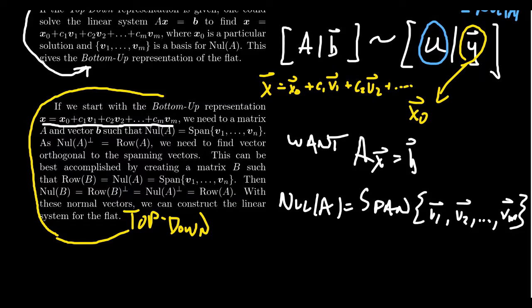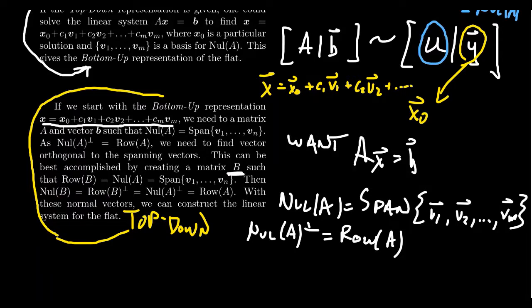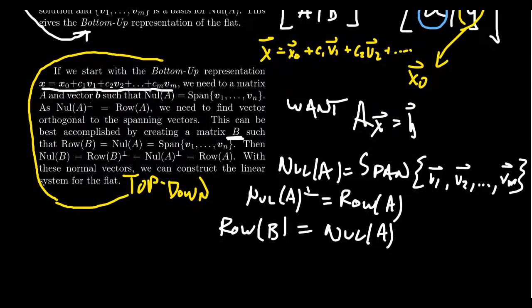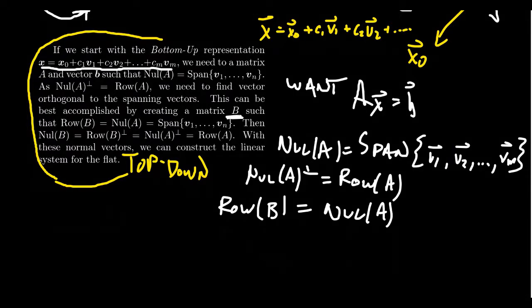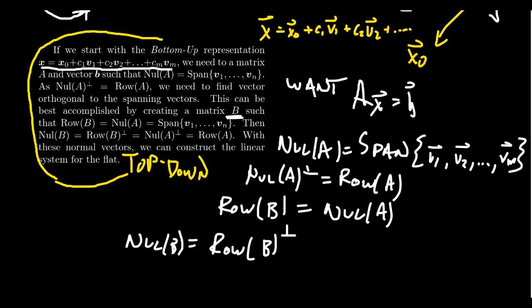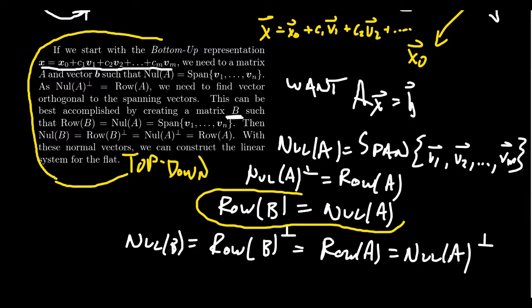The null space and the row space are related: the orthogonal complement of the null space gives us the row space. So we want to find a matrix B so that the row space of B equals the null space of A. If we take orthogonal complements, the null space of B equals the row space of A, which is the orthogonal complement of the null space of A. So we're going to look for a matrix B whose row space equals the null space of A, by setting up a matrix whose rows coincide with the spanners.